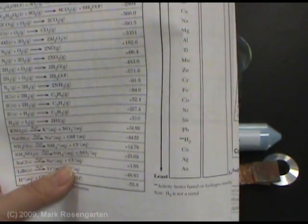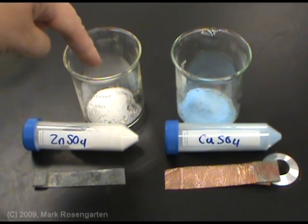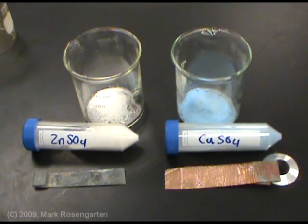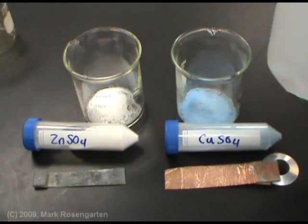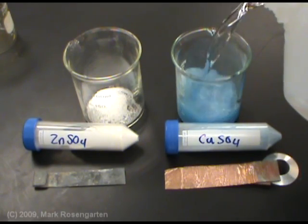Let's put that to the test. In this beaker, we have some zinc sulfate. In this beaker, we'll have copper sulfate. To put the ions into solution, we'll simply dissolve them in some distilled water.